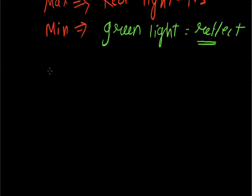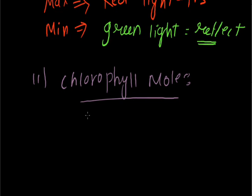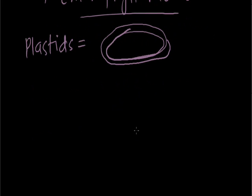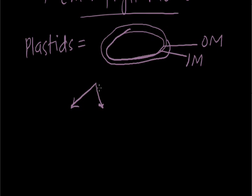Now, the second essential element is chlorophyll molecule. Before going to chlorophyll molecule, we know about the plastid. What are the plastids? Plastids are double-membranous-bound organelles. They are double-membranous organelles. They are divided into two categories — double membrane: one is the inner membrane and the other is the outer membrane. The double-membrane-bound structure is divided into three categories.